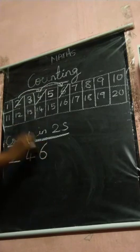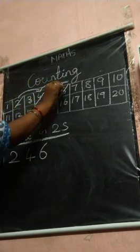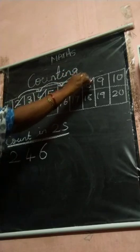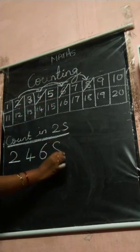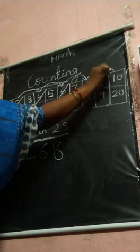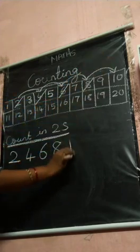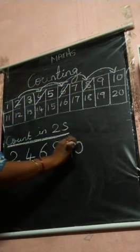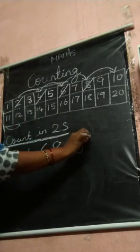Two, four. After you jump one number, two jumps give you six. You take it and write the six. After two jumps, what will come? Eight. Strike out that eight and write it. After two jumps, what will come? Ten.